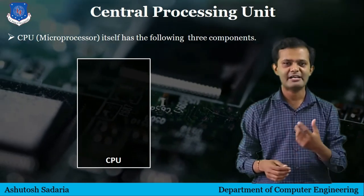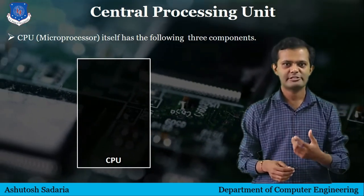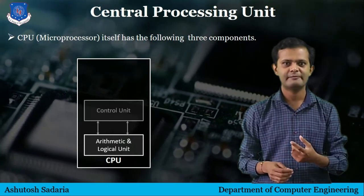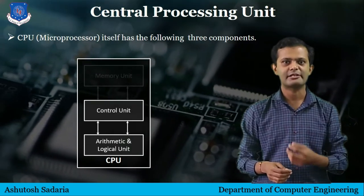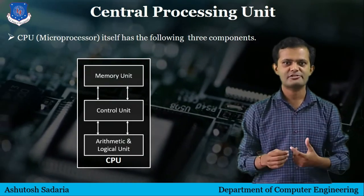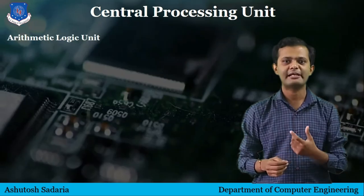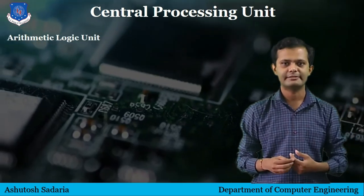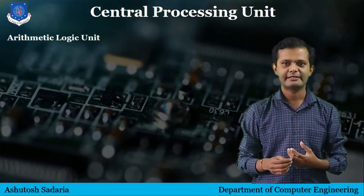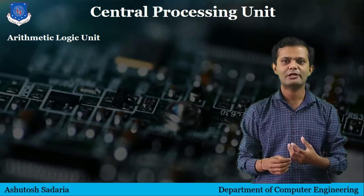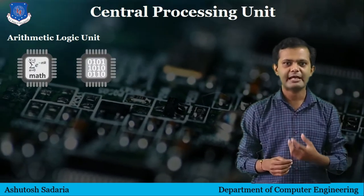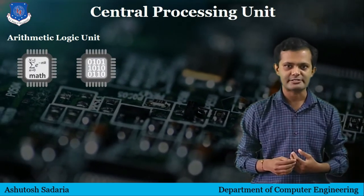There are three parts of CPU. The first is Arithmetic Logical Unit, the second is Control Unit, and the third is Memory Unit. The Arithmetic Logical Unit contains electronic circuitry which executes all arithmetic and logical operations.